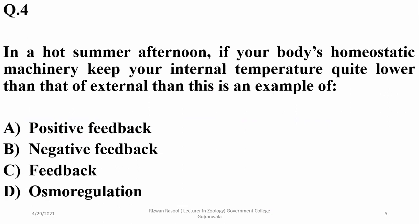With reference to homeostatic mechanisms: on a hot summer afternoon, if your body's homeostatic machinery keeps your internal temperature quite lower than that of the external environment, this is an example of a negative feedback mechanism. So beta is the right answer.